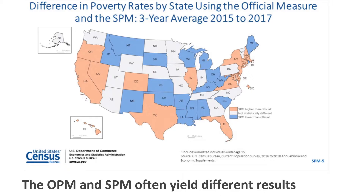As shown on this map, the OPM and SPM often yield different results. The states in red capture a higher percentage of poverty using the SPM, while the states in blue captured a higher percentage using the OPM. In general, the SPM tends to be higher than the OPM in states with a higher cost of living due to the geographical adjustments of the SPM. Nevertheless, it is problematic that these measures can produce such differing data.